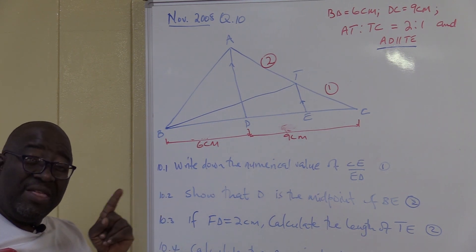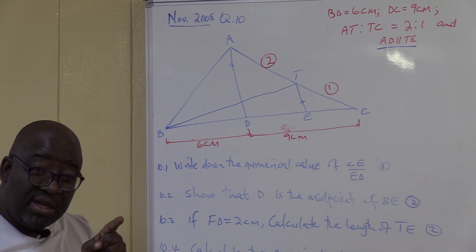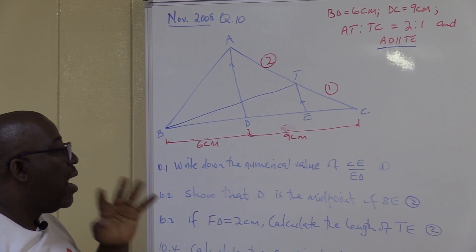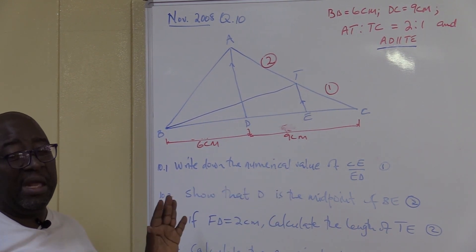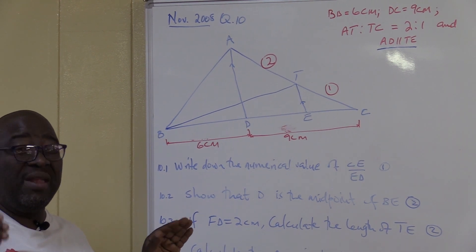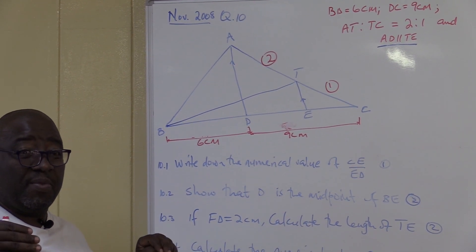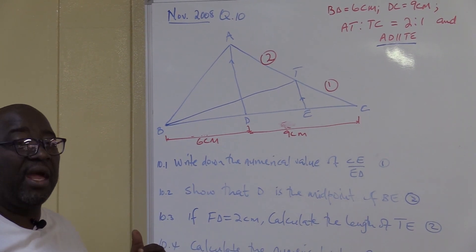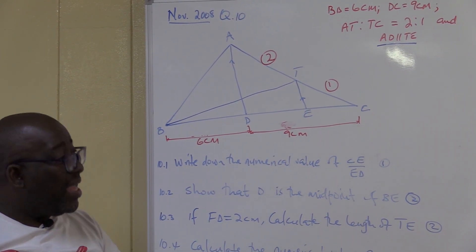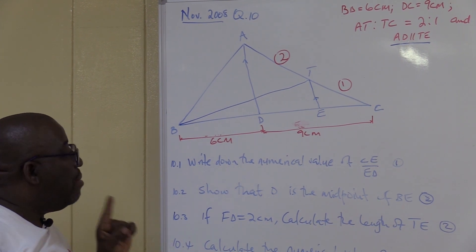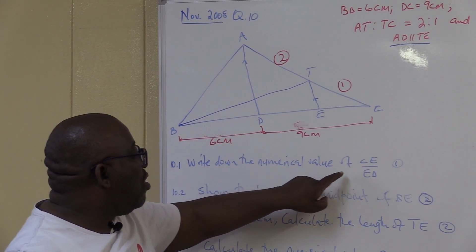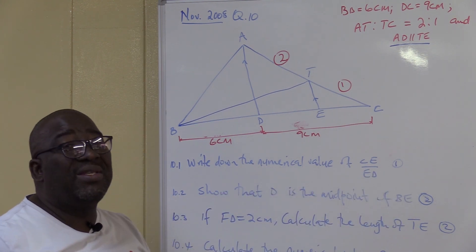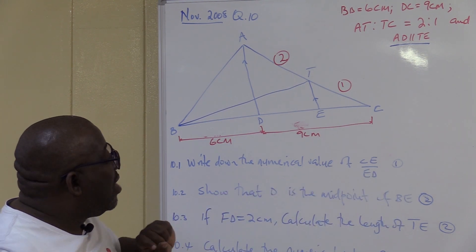The question says 'write down' — it did not say think, did not say calculate. It simply said: write down the numerical value of CE over DE. I go there and check what that is. I don't panic. One of the main causes of failure is fear — people just panic in the exam. If you don't understand the question, read it again. It will come back. As long as you think along those three theorems, you'll come right. It's one mark, so it's something very easy.